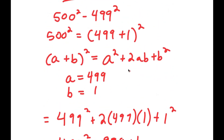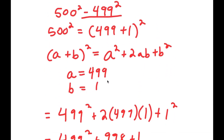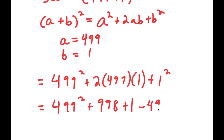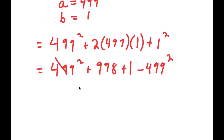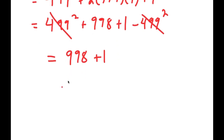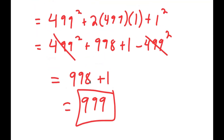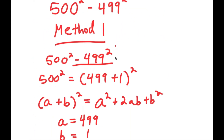This is equal to 499 squared plus 998 plus 1. And remember at the end we have minus 499 squared, so we add that back in. The 499 squared terms cancel out, so we're left with 998 plus 1, which equals 999. That is the first method.